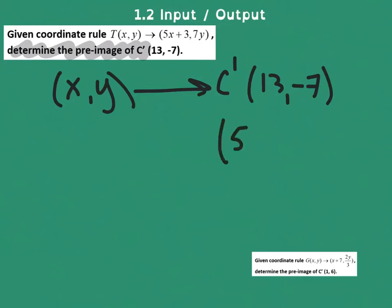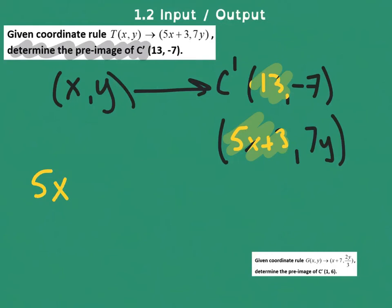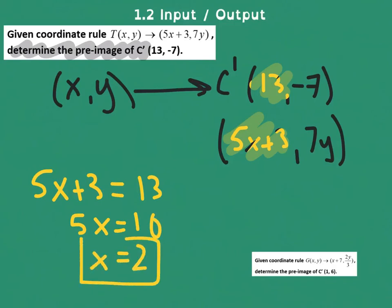Now my technique for this is to say, well what got us there was 5x plus 3 and 7y. So you can kind of say to yourself, well wait a minute, 13 was created by this thing. So just solve that. Say, well what did we do with 5x plus 3 to get 13? And we get a nice value for x. Look at that. That's how easy it is to find our x, working it backwards.